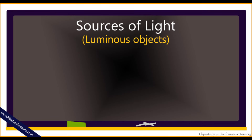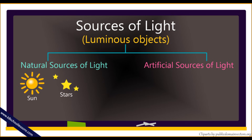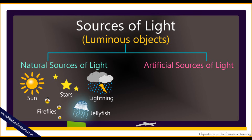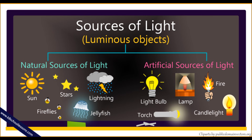Now let's group the sources of light. Sources of light can be divided into two types: natural sources of light and artificial sources of light. Sun, stars, lightning, fireflies and jellyfish are some natural sources of light. Light bulb, lamp, fire, torch and candlelight are some of the artificial sources of light.